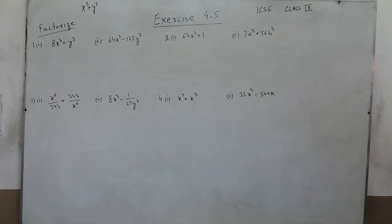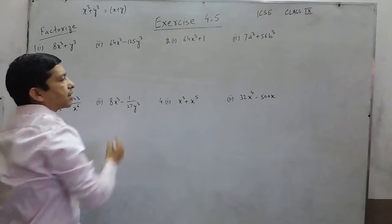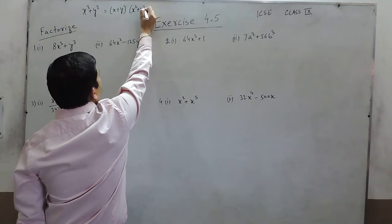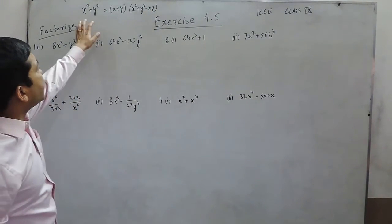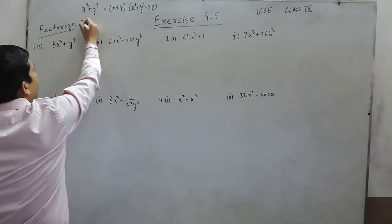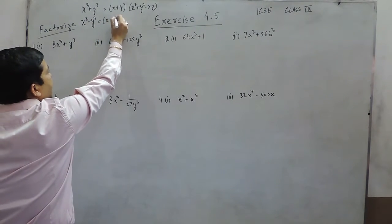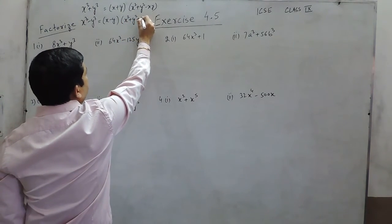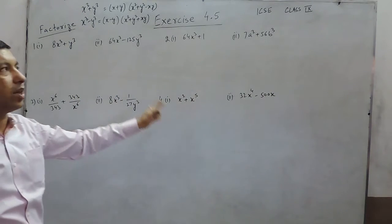The first identity is x³ plus y³. When we have to solve x³ plus y³, it has two factors: one factor is (x + y), and another factor is (x² + y² − xy). If there is a negative sign in between, then x³ minus y³ can be written as (x − y) as the first factor, and (x² + y² + xy) as the second factor. So these two identities we have to learn for this particular exercise.